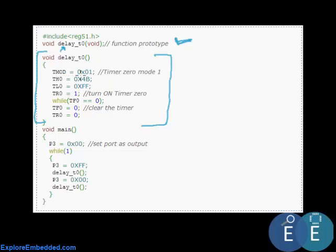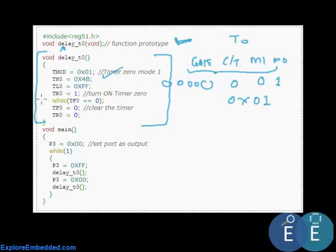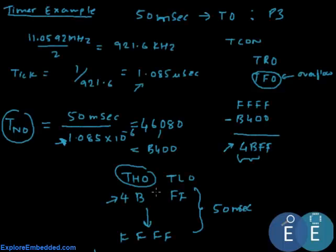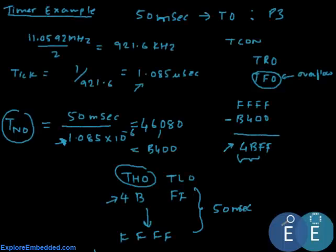What we do is we put the timer in mode 1 which is 16 bit timer. If you could recall, this should be gate C/T M1 M0, this will be the lower nibble for timer 0. For timer 1 there would be similar 4 bits which we are not using. Assuming those to be 0 and we are using it in mode 1, this would be 0 and 1. Basically, if the other 4 bits are 0, that would make it 0x01. And as you have calculated before, TH0 should be 4B and TL0 should be FF. So we load the counter here, or load the timer here.